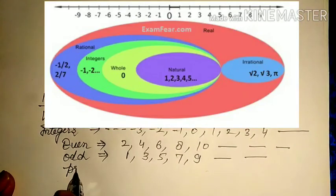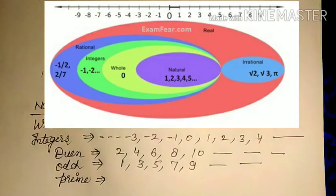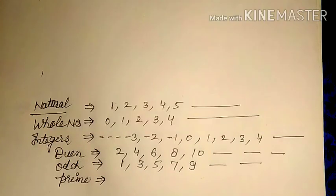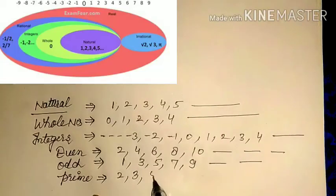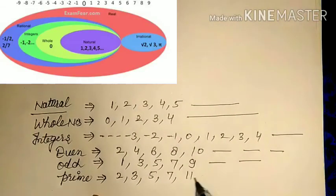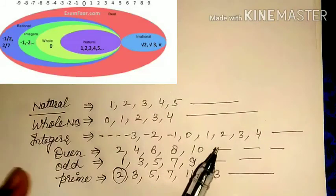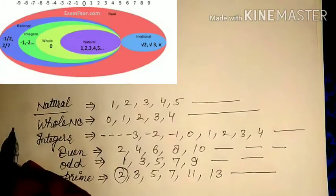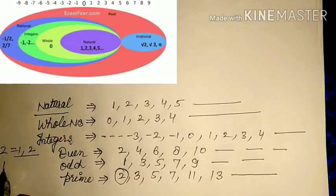Now, prime numbers. A number that has only two factors — in other words, a number divisible by one and itself only — is known as a prime number. For example: 2, 3, 5, 7, 11, 13. These numbers have only two factors. If we factorize 11, we get one and eleven — only two factors. That makes it a prime number.